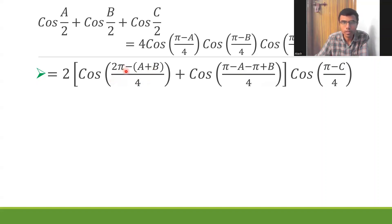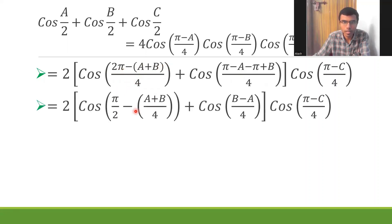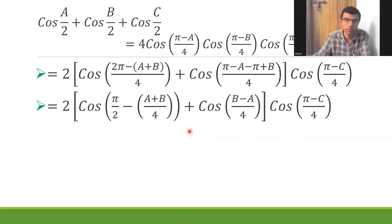Next I split the denominator for both terms: (2π/4) − (A+B)/4, which gives π/2 − (A+B)/4. For the second term, π and −π cancel and I'm left with (B−A)/4. I'm going a bit slow here because this part can be tricky if you're hearing it for the first time.